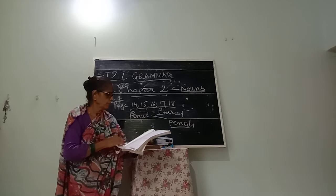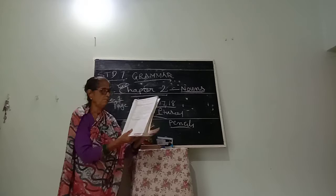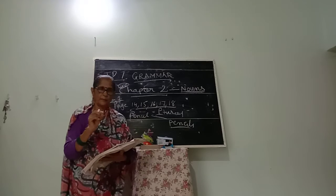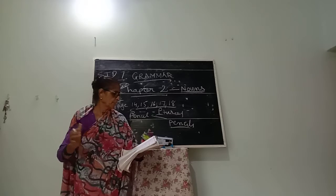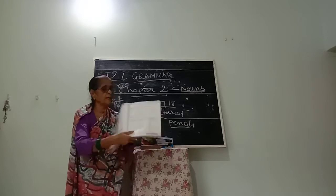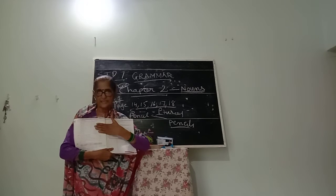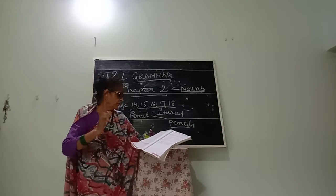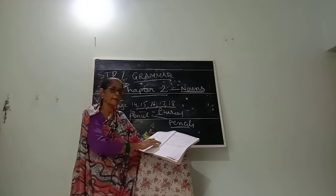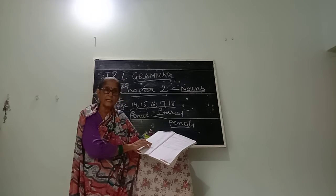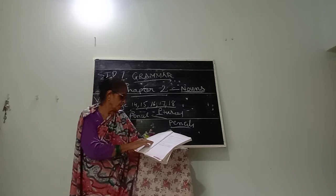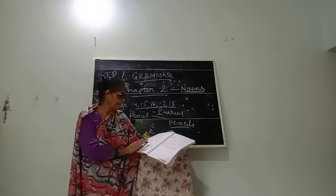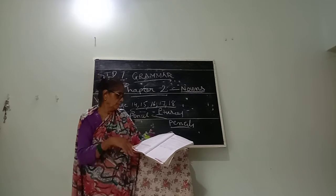Now turn to page 16. A collective noun refers to a group or set of animals, persons or things forming a full unit. For example, a herd of buffaloes, a flight of geese — these you will have to learn by heart. I will be taking a test on this. Now collective nouns used for groups of people: a group of people watching a match — we call them spectators. A group of people at a religious meeting — congregation. A group of people listening to a concert or lecture — audience. A group of people gathered for a specific common purpose — assembly.